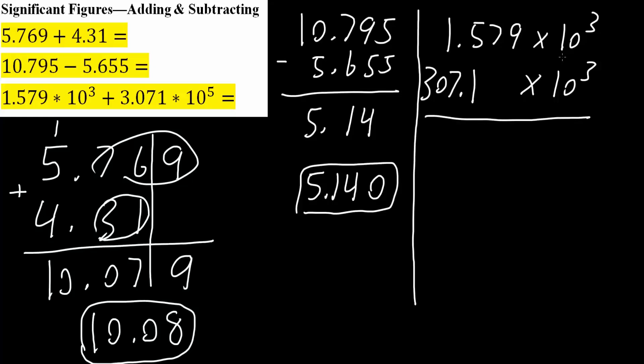And once we have it in the same form, we do the exact same method. So this one right here has one number after the decimal place, but this one has 3. And so our final answer would only have one.